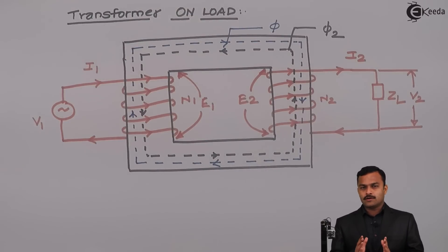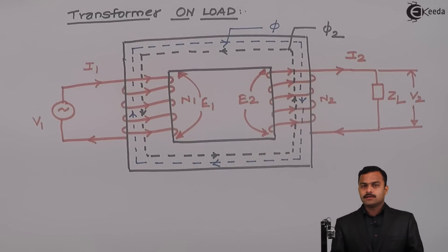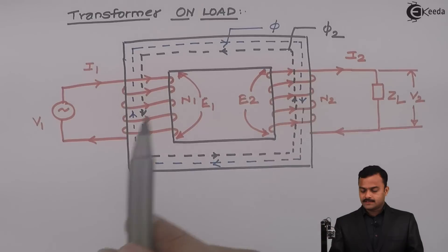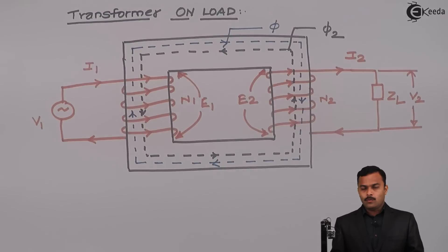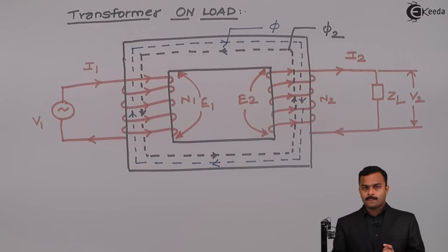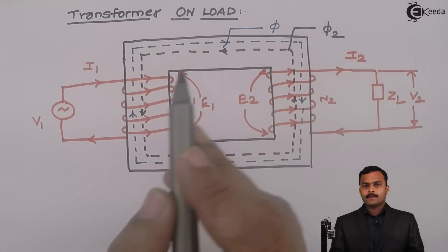So what is happening inside the core is that the main flux is reduced, and because of that we cannot say the EMF equation is directly proportional to flux phi, which we assume to be constant. So what do we need to do? We need to make sure that in the core there will be only phi — there won't be an effect of this I2. How to take care of it? It will be taken care of by I1. I1 will pull out some extra current from the supply in order to nullify the effect of phi2. So there will be one more flux inside the core, and the direction of that flux will be opposite to and equal to phi2.